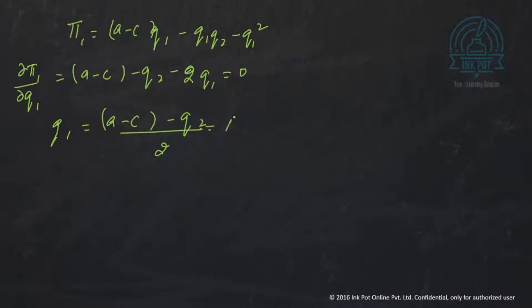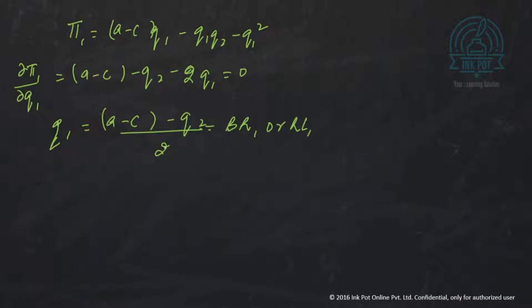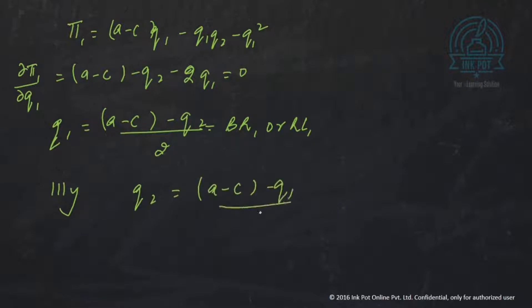This is the reaction curve or best response curve of firm 1. It defines how much quantity firm 1 will produce given whatever quantity firm 2 is producing. Similarly, when you solve for firm 2, you get Q2 = (A minus C minus Q1) / 2. If C1 and C2 were not equal, then C1 would appear in firm 1's curve and C2 in firm 2's curve; the rest remains the same.